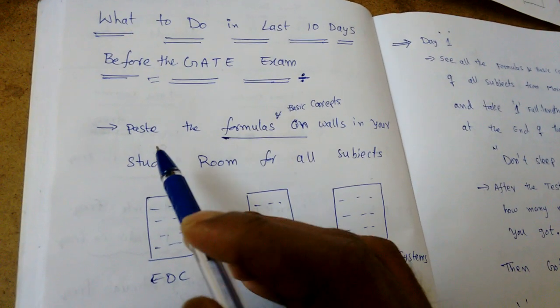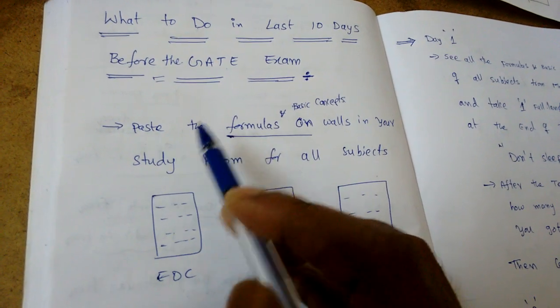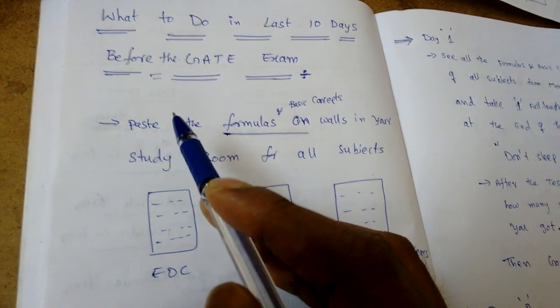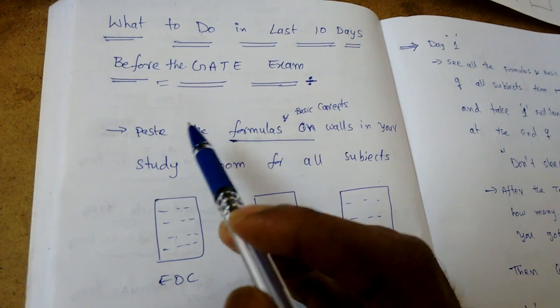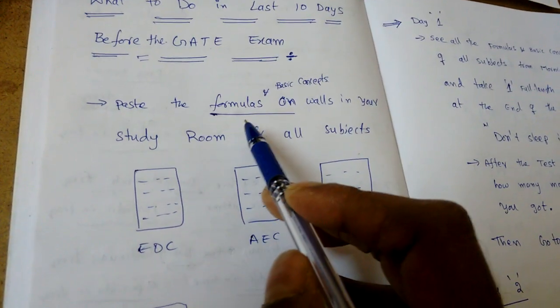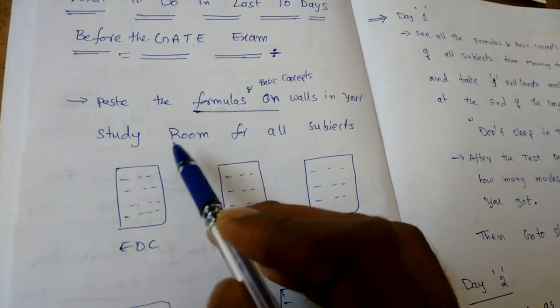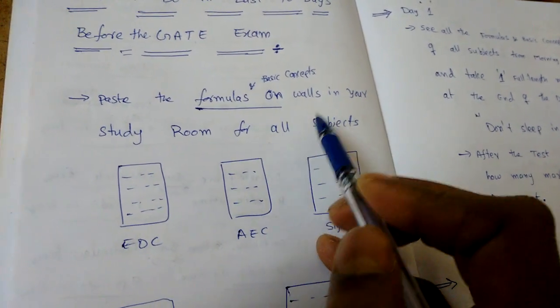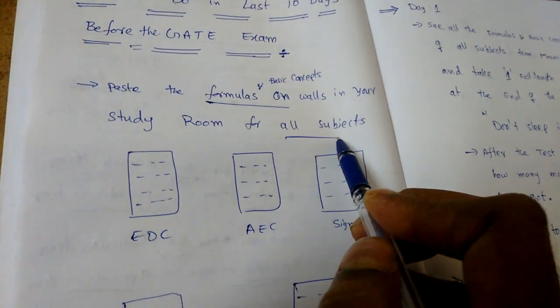every 3 days, revision should be done. So at least before 10 days, you should have completed at least 3 to 4 times revision. Now, paste the formulas and basic concepts on walls in your study room for all subjects.